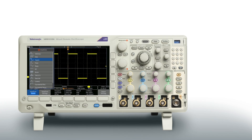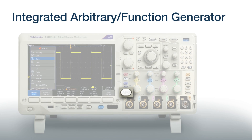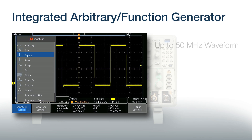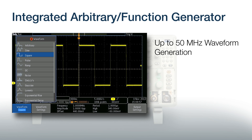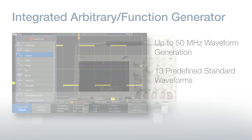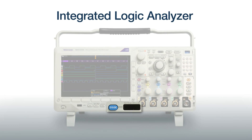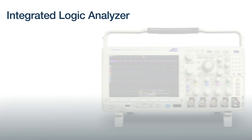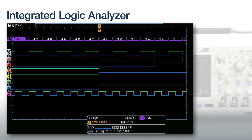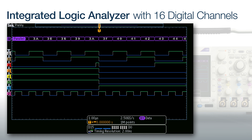Add the integrated arbitrary function generator to quickly and simply create a wide range of signal types right on your oscilloscope. If you need to test buses or other digital logic, the optional Logic Analyzer adds 16 digital channels, so you can look at many points in your design at once.